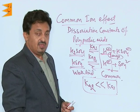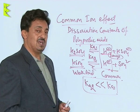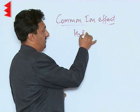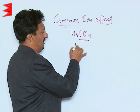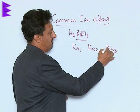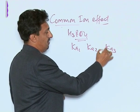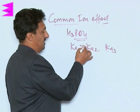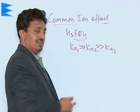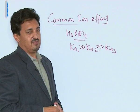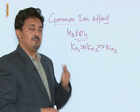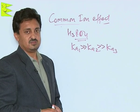For phosphoric acid H3PO4, there are three dissociation constants: KA1, KA2, and KA3. Always remember that KA1 is much greater than KA2, which is in turn much greater than KA3. The values of subsequent dissociation constants keep decreasing, and the main reason is the common ion effect.